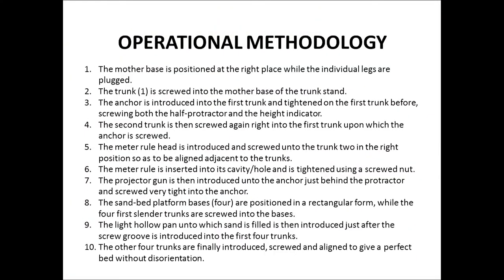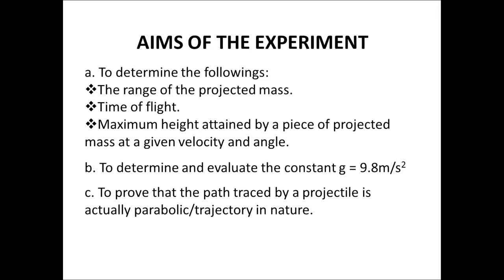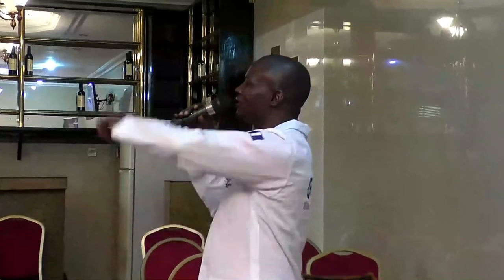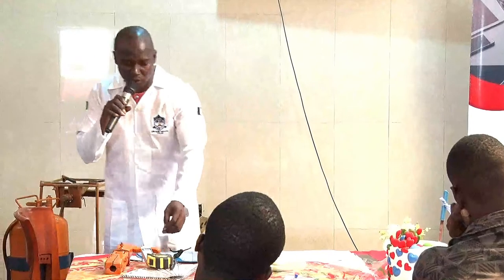The aims of the experiment are to determine: the range of the projected mass, the time of flight, the maximum height attained by the projected mass at a given velocity and angle, and to evaluate the constant g. Scientists have told us the acceleration due to gravity is 9.8 m/s², approximately 10 m/s², but with this equipment you can verify that. Also, to prove that the path traced by a projectile is actually a parabola. Students who plot their graph will see the parabola and state their precautions.